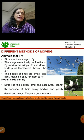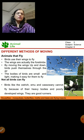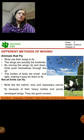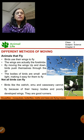For flying, the bodies of birds are small and light, making it easy for them to fly. But not all birds can fly. Birds like ostrich, emu, and cassowary cannot fly - they have got heavy bodies. Because of the heavy body they cannot fly; they have forgotten how to fly. They can walk, but their wings are also not very much developed - they are poorly developed wings. They are good runners. These birds cannot fly.